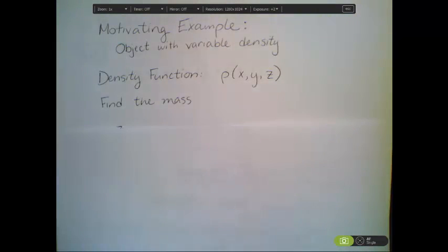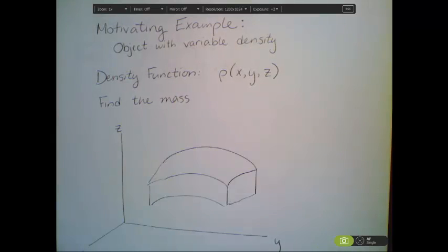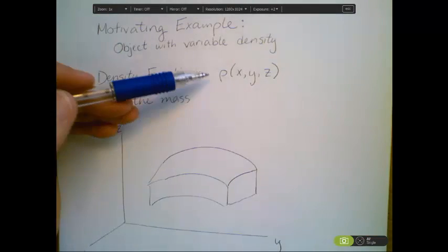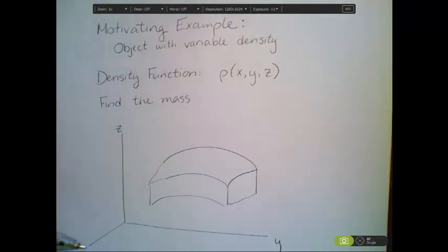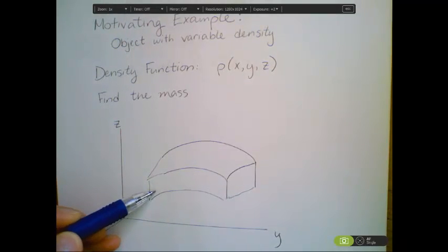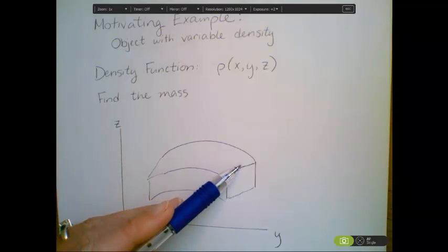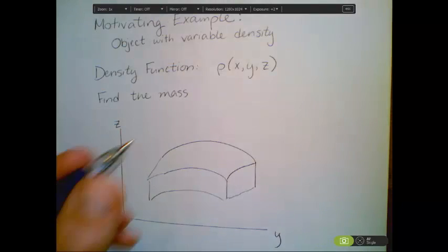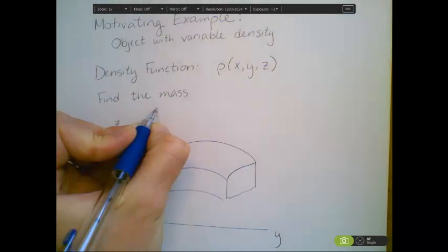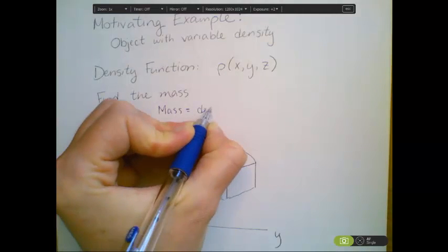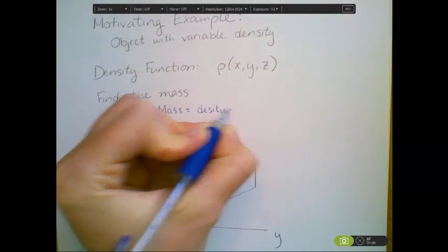Our motivating example, let's say we have an object with variable density, and the density, apparently this is convention, is to use rho here, that the density depends upon where you are in three-dimensional space. So we have some object here, and over here it might be really sort of relatively dense, and here it's less dense, and what we want to do is find the mass of this object. What is mass?